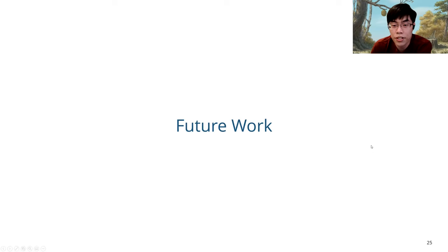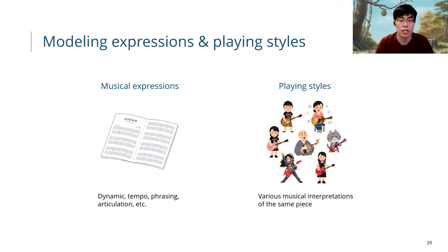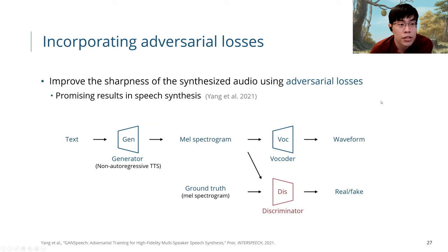There are some future work that we would like to work on. First is that we want to model expressions like dynamic, tempo, phrasing, articulation available on the scores, and we also want to model different playing styles. Currently we are using performer ID, but we could, for example, try to build a latent variable model to handle the different playing styles. We also see that the HiFi-GAN baseline is able to generate very sharp synthesized audio, so we would like to incorporate adversarial losses to improve the sharpness of the synthesized audio. There are some promising results in speech synthesis, so we might want to go towards that direction.